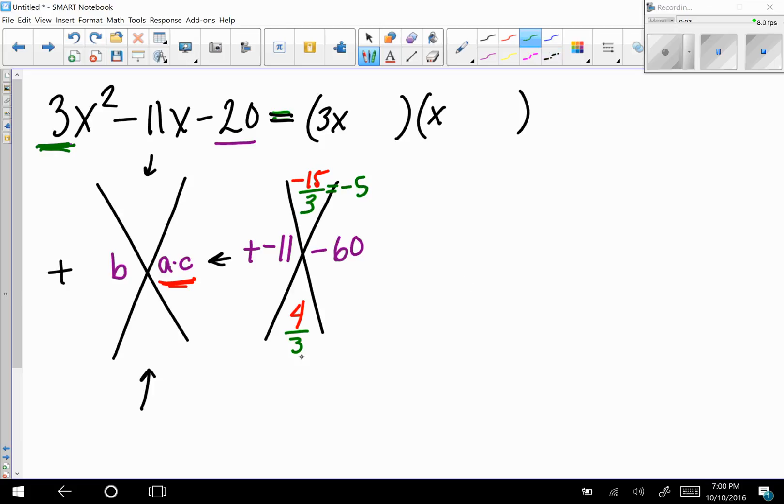Well, that seems silly. How could it be 4 thirds? These are supposed to come out to be integers. Well, let me show you. And you know that one of them is supposed to have a 3x in it. Let's just write this out. x minus 5, x plus 4 thirds, just like we did before when we did the X game.